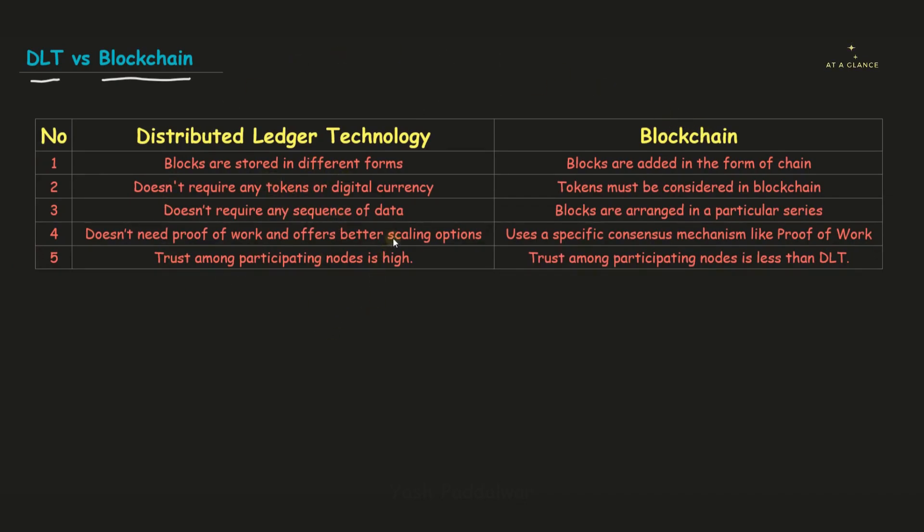Before that, let me tell you that blockchain is a type of DLT. Distributed ledger technology is a broader technology when we compare it with blockchain. You can think of it something like this: blockchain is a type of DLT. So keep this thing in mind and now let's start the difference between these two.